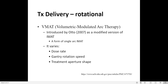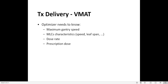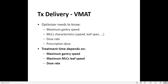Characteristics of VMAT are that dose rate, gantry rotation speed, and treatment aperture shape all vary. The optimizer needs to know the maximum gantry speed, MLC characteristics, dose rate, and prescription dose. Treatment time will depend on maximum gantry speed, maximum MLC leaf speed, and dose rate.